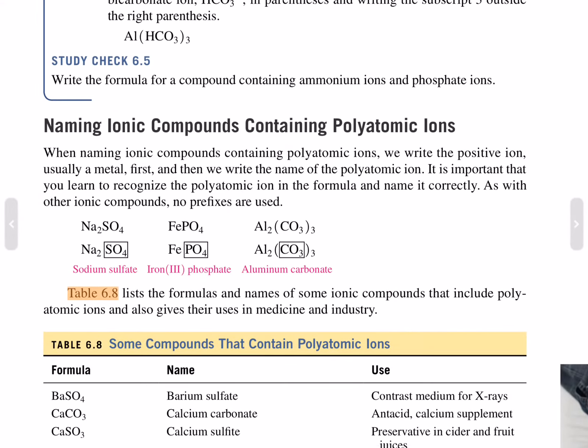Naming ionic compounds containing polyatomic ions. When naming ionic compounds containing polyatomic ions, we write the positive ion, usually a metal, first, and then we write the name of the polyatomic ion. It's important that you learn to recognize the polyatomic ion in the formula and name it correctly. As with other ionic compounds, no prefixes are used. Na2SO4, sodium sulfate. FePO4, iron(III) phosphate. Al2(CO3)3, aluminum carbonate.